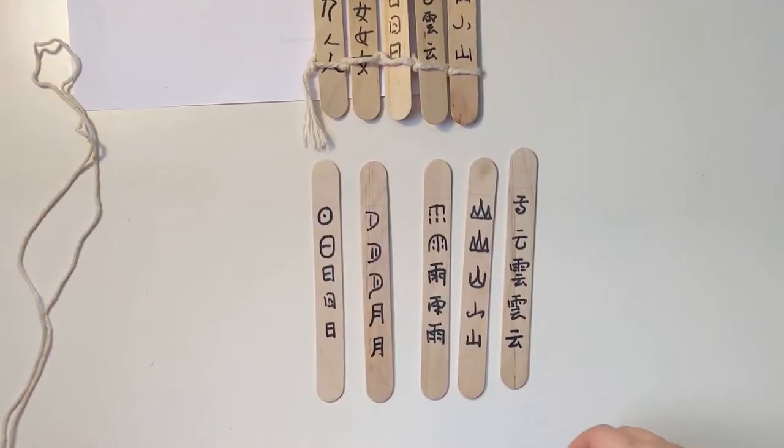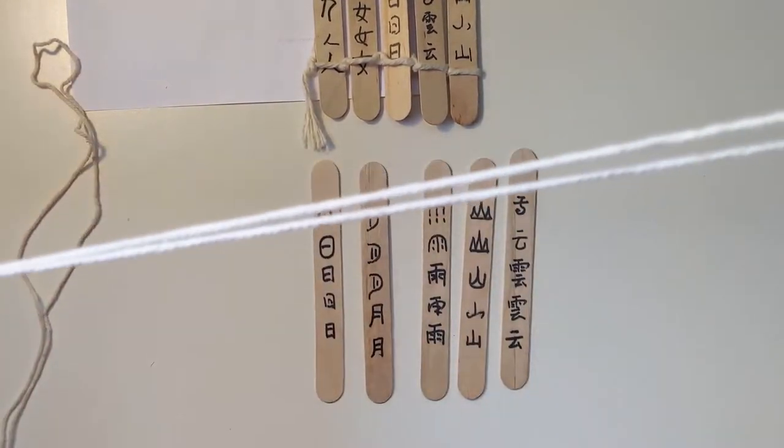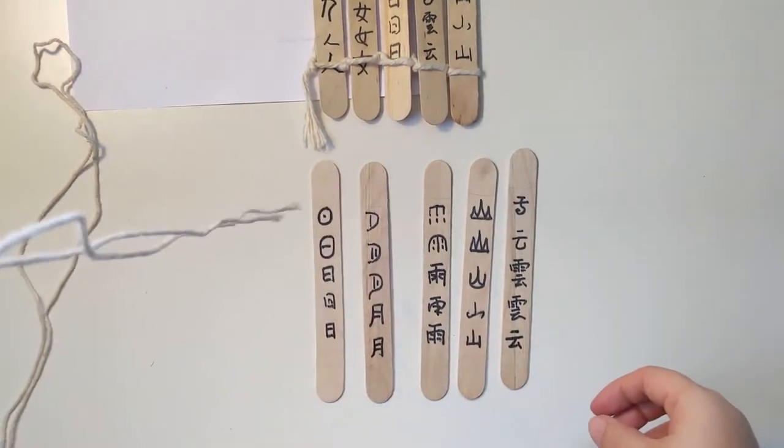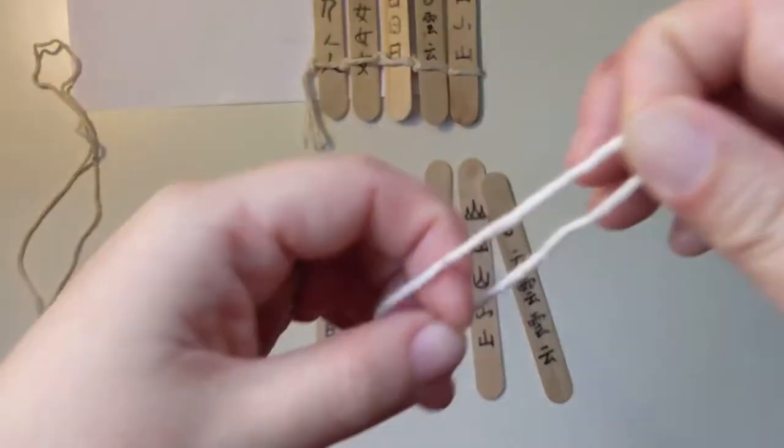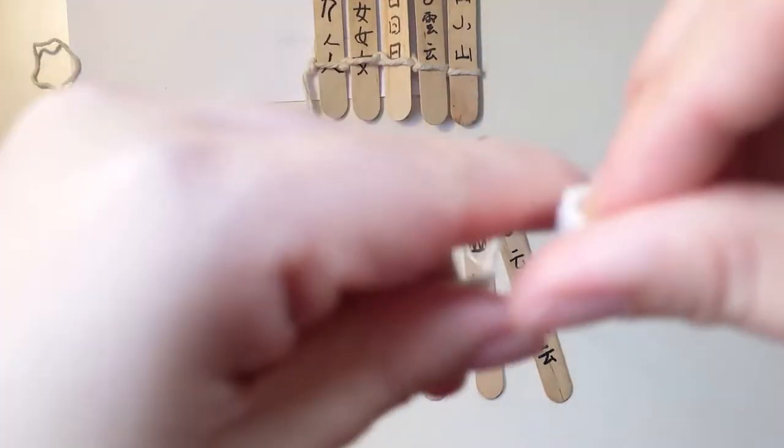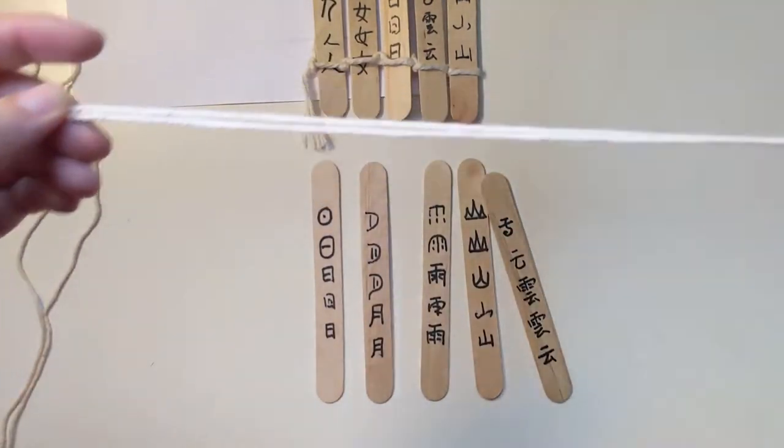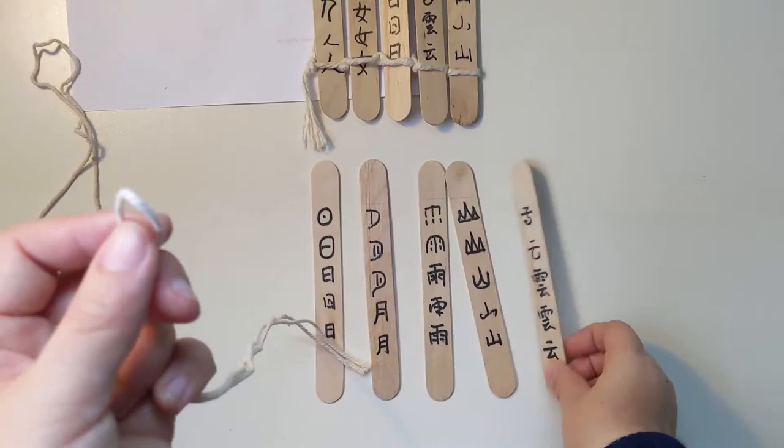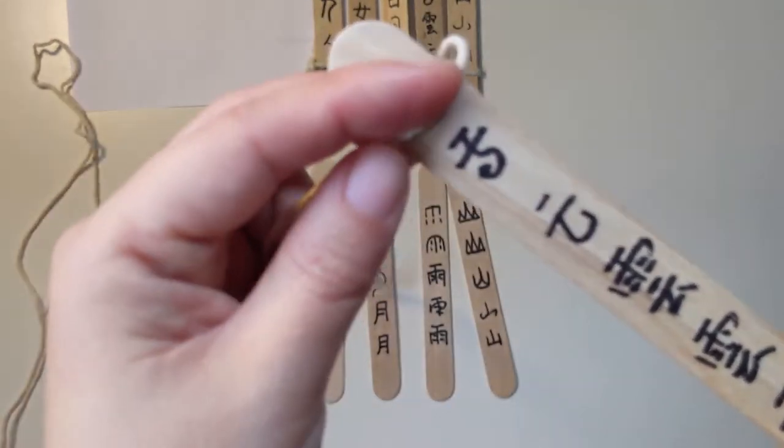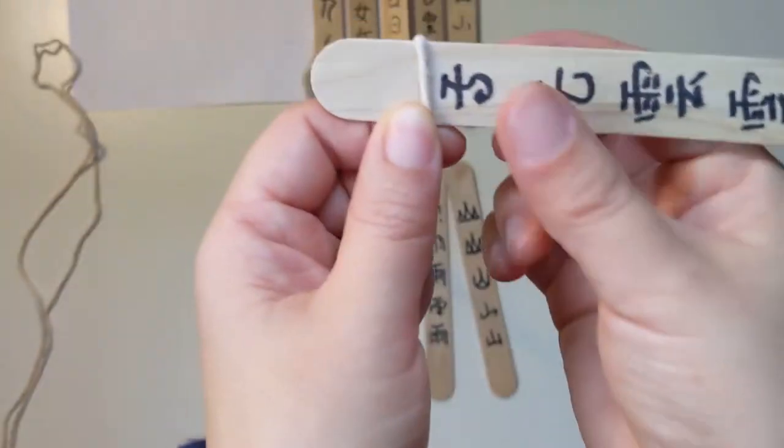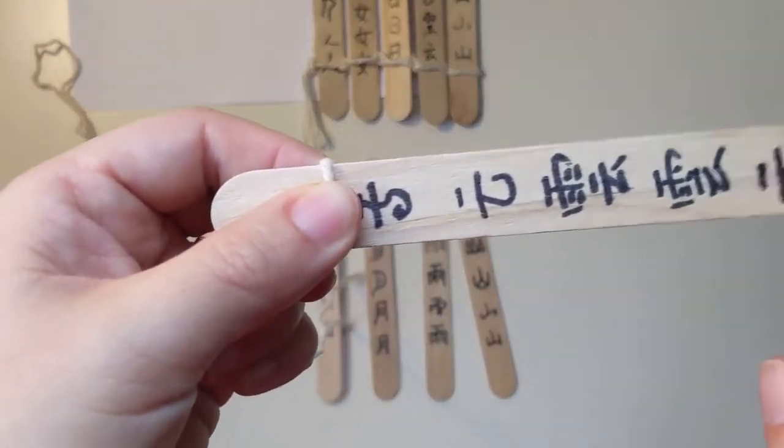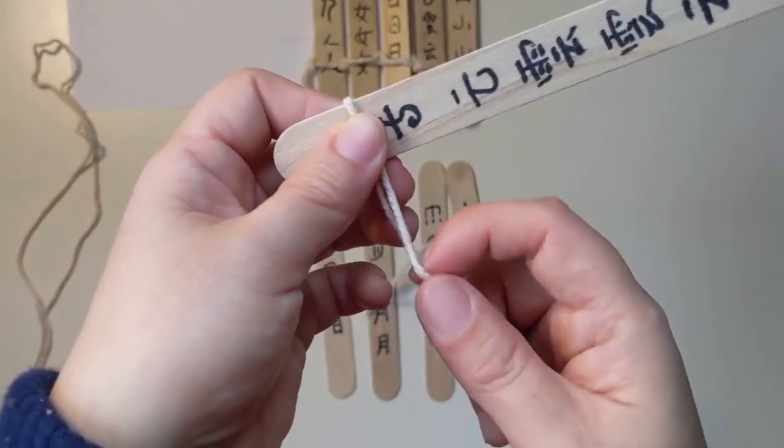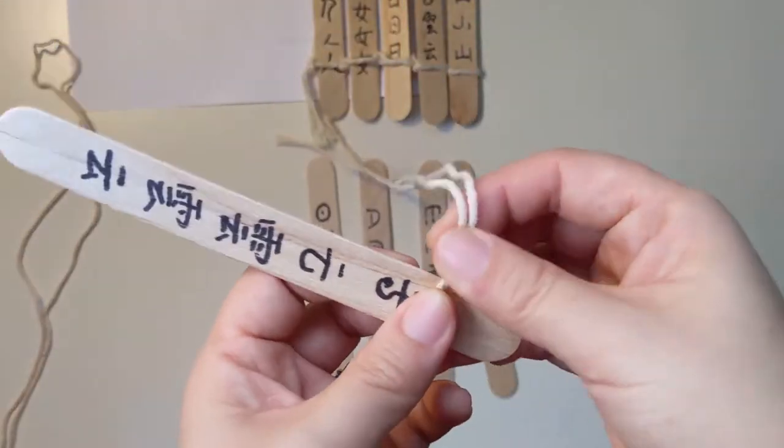After you've finished writing on the slats or the tongue depressors, we are going to tie the string around our slats. I put it horizontally and fold one string in half, and slide one edge. This will be easier if you have a parent or sibling to help you hold the slats, but I only have myself so I try to manage it.